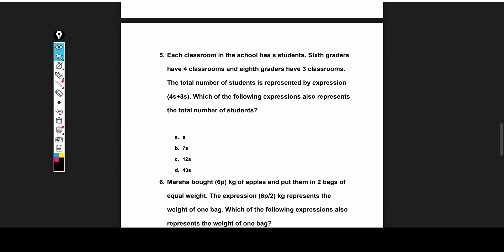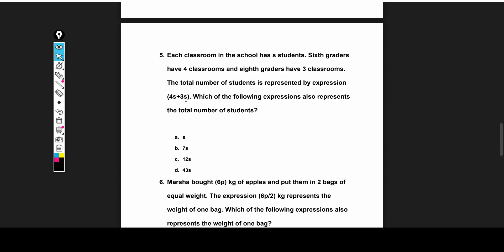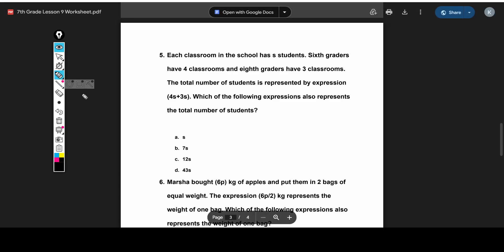Next is similar. Each classroom has S students. 6th graders have 4 classrooms, and 8th graders have 3 classrooms. So that's 4S plus 3S. And what else is equal to 4S plus 3S? Well, 4 plus 3 is 7. So this gives us 7S. We can add them because they're both in terms of just S.